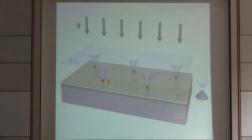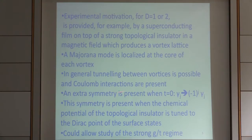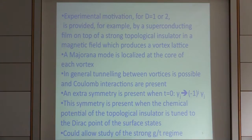In general, there can be tunneling processes so particles can hop between the vortex lattices, and there could also be interactions, probably longer range than the shortest one written down. An extra symmetry is present in the Hamiltonian when the hopping term vanishes — it takes gamma_j to minus one to the j times gamma_j. This symmetry is present when the chemical potential of the topological insulator is tuned to the Dirac point of the surface states, meaning it might be possible to tune the hopping term to zero and study the strong interaction regime.